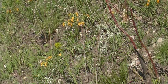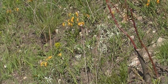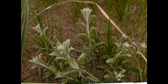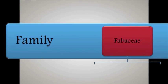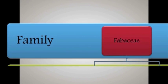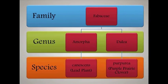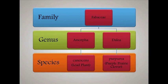Plants can be identified by using a common name. Common names are names like lead plant — that's the plant seen here. Plants are also grouped into families. Family names are used by scientists and are given to plants that have many similarities. Lead plant is in the pea family, called Fabaceae. Also in the pea family is purple prairie clover. Both of these plants are found in prairies in Wisconsin.